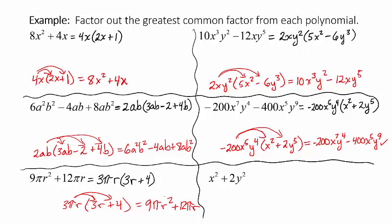Now look at this last example: x² plus 2y². One term has x and the other has y — these are different variables, and the numbers have no common factor other than 1. Do these two terms have any common factors? No. There's no common factor we can pull out, so this is not factorable. Another word for this is prime or irreducible. If a polynomial expression doesn't have any factors you can pull out, we say it's prime. Now it's time for you to get some practice on your own.